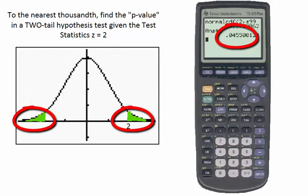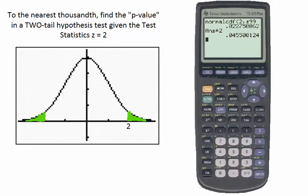To the nearest thousandths, that is 0.046. Those are the three different types of problems where you are given a test statistic z on the x-axis and asked to find the p-value, which will be either the area under the right tail, left tail, or the area under both tails.